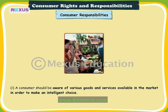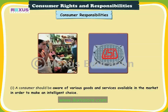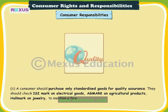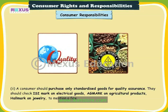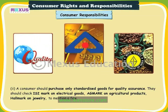One: a consumer should be aware of various goods and services available in the market in order to make an intelligent choice. Two: a consumer should purchase only standardized goods for quality assurance. They should check the ISI mark on electrical goods, AG mark on agricultural products, and hallmark on jewelry, to mention a few.